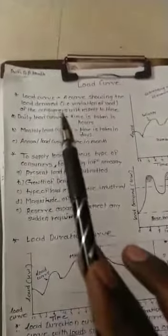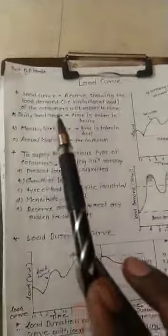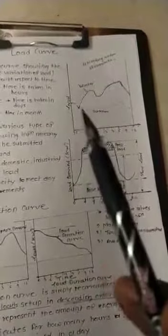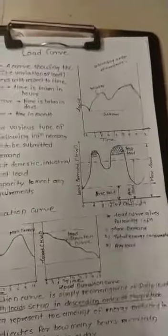Load curve means a curve showing the load demand, that is variation of the load of the consumer with respect to time. This is the load duration curve. The graph between load versus time. In load curve, the curve in ascending order of the magnitude.